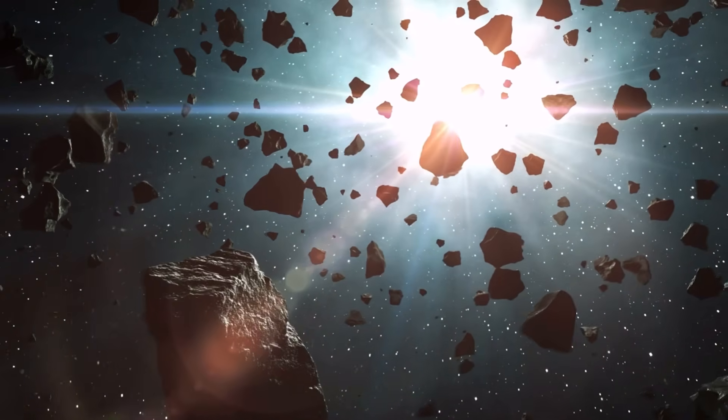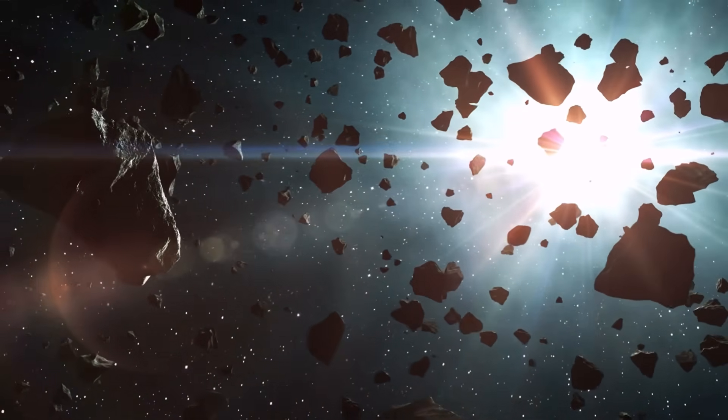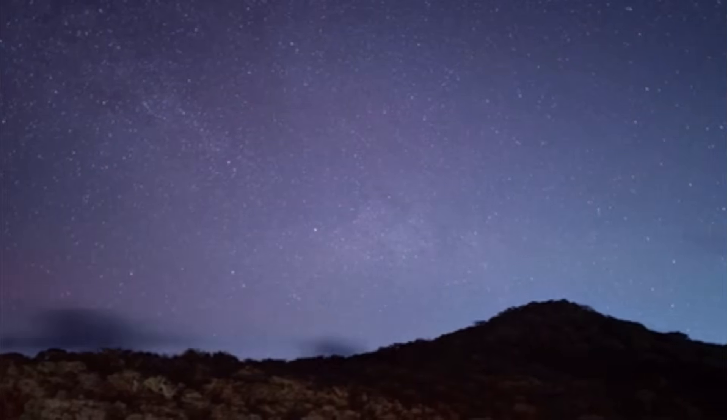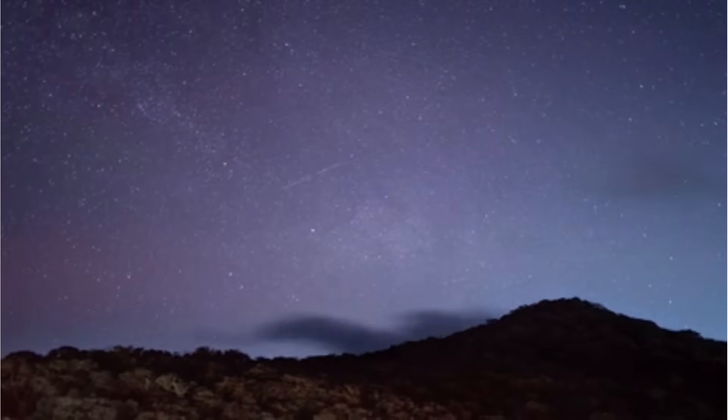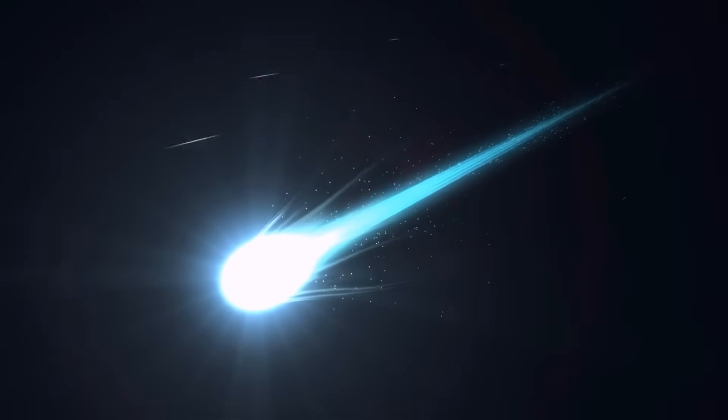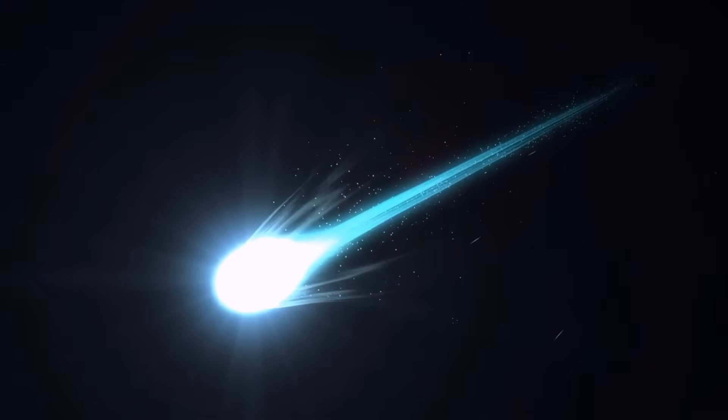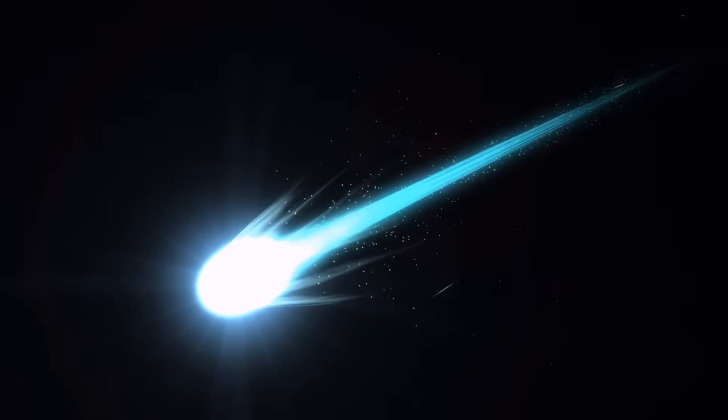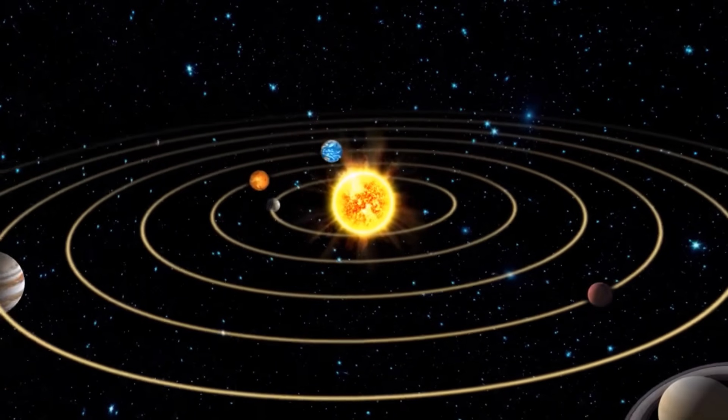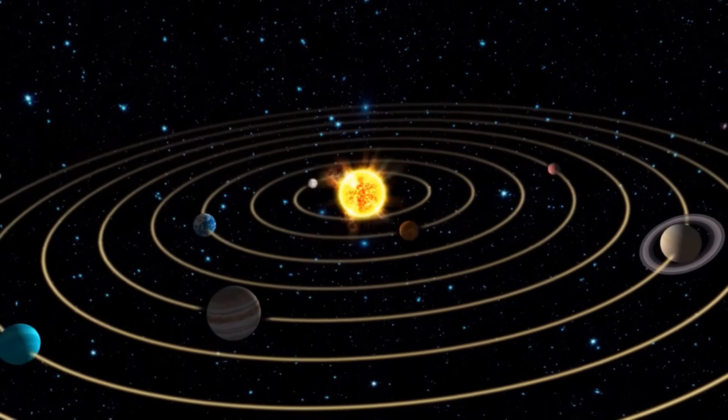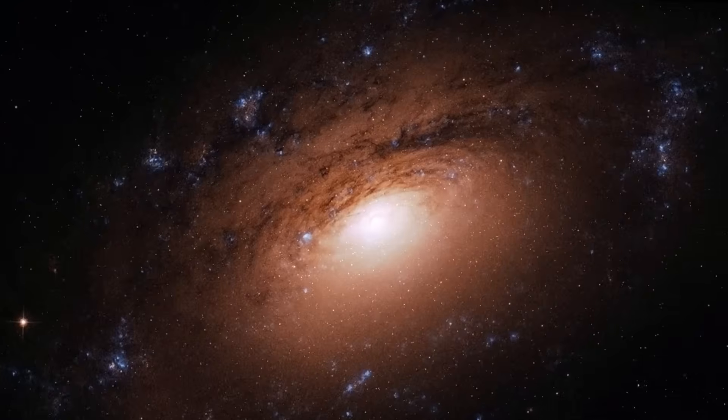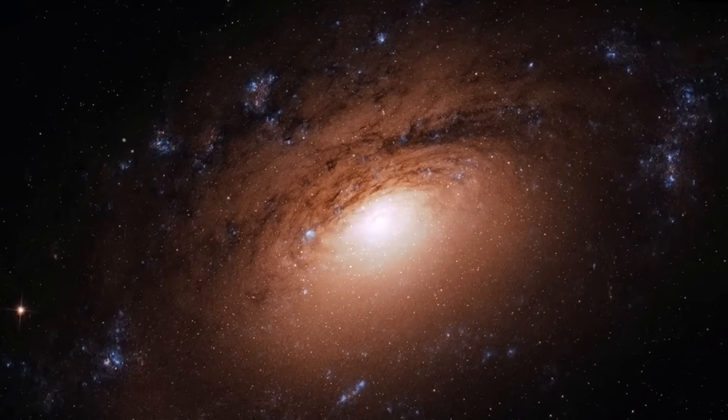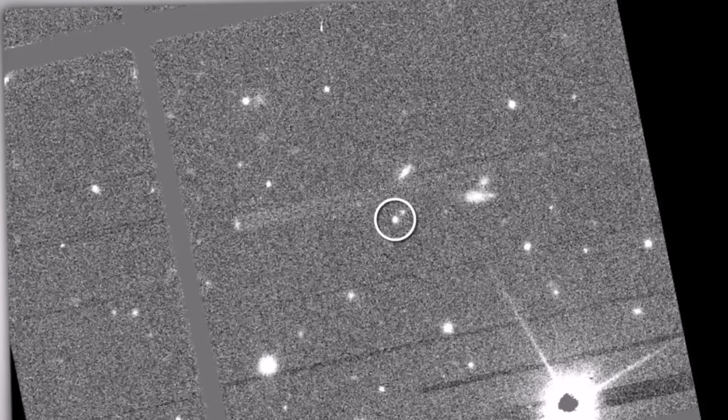If Oumuamua was a speedboat that zipped through our harbor, 3i Atlas is an aircraft carrier. It's bigger and brighter, and its exhibiting behavior is even more bizarre than its predecessor. Oumuamua opened the door to a thousand questions. Atlas might just be the answer. To understand 3i Atlas, you have to understand the mystery of Oumuamua. It wasn't just an interstellar rock. It broke the laws of physics, or at least, our understanding of them. As Oumuamua looped around the sun, it did something impossible. It accelerated. It sped up, pushed by a force that we couldn't see.